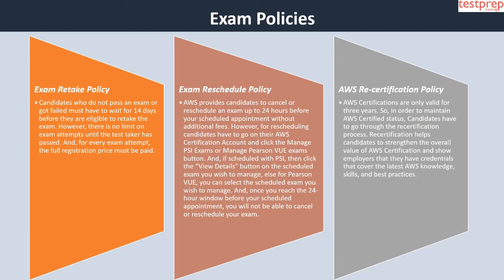Second, exam reschedule policy: AWS allows candidates to cancel or reschedule an exam up to 24 hours before their scheduled appointment without additional fees. To reschedule, candidates go to their AWS Certification Account and click the Manage PSI Exams or Manage Pearson VUE Exams button. Once you reach the 24-hour window before your scheduled appointment, you will not be able to cancel or reschedule. Third, AWS recertification policy: AWS certifications are valid for three years, so candidates must go through the recertification process to maintain their certified status, which demonstrates the latest AWS knowledge, skills, and best practices.